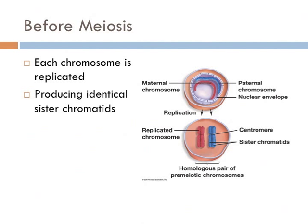Just before meiosis occurs, the nuclear envelope breaks down, and the chromosomes duplicate to produce sister chromatids. This process is identical to mitosis. To understand meiosis, it's critical to understand the relationship between chromosomes and sister chromatids. An unreplicated chromosome consists of a single DNA molecule, while a replicated chromosome consists of two sister chromatids.